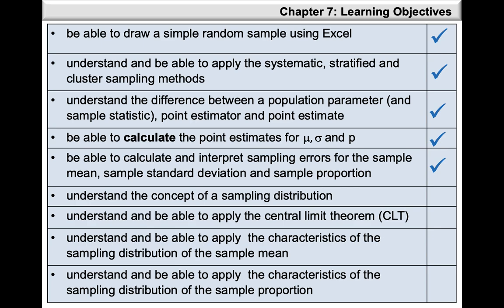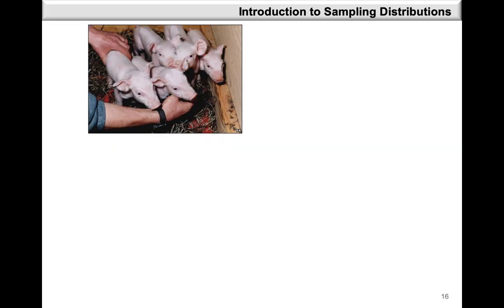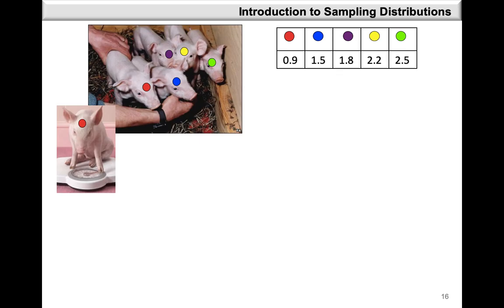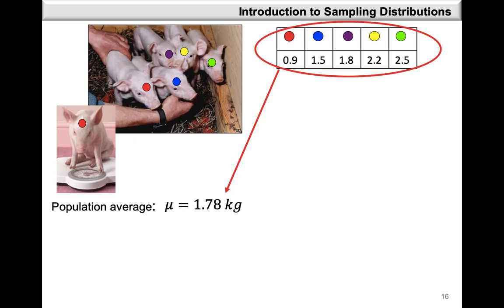In this video we're going to take a look at the concept of a sampling distribution and how to apply the central limit theorem. We begin by considering a population of five piglets that we are going to uniquely label. We are interested in their weight, so we weigh each piglet individually and record their weight in kilograms, giving us a population of five weights. We find that the population average value is 1.78 kilograms.